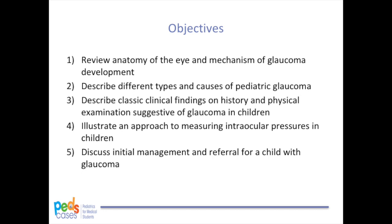After listening to this podcast, the learner should be able to: 1. understand the anatomy of the eye and mechanism of glaucoma development; 2. describe different types of pediatric glaucoma; 3. recognize classic clinical findings on history and physical examinations suggestive of glaucoma in children; 4. illustrate an approach to measuring intraocular pressures in children; and 5. discuss initial management and referral for a child with glaucoma.